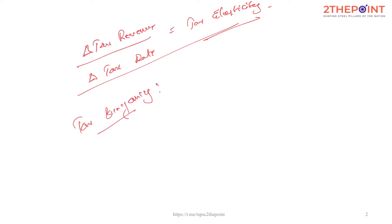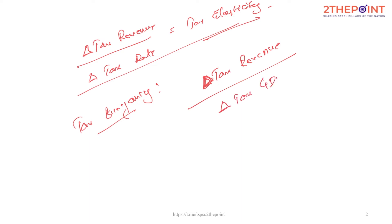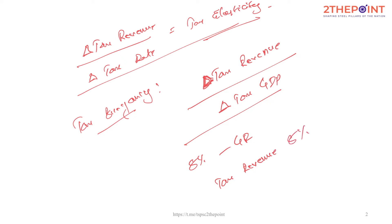Now, tax buoyancy measures the change in tax revenue — delta means change in tax revenue — with respect to the change in GDP or growth in the economy. So when GDP grows, does tax revenue also grow proportionally? For example, if the Indian economy reports an 8% growth rate, does it really mean the total tax revenue earned compared to the previous year also increases by 8%?